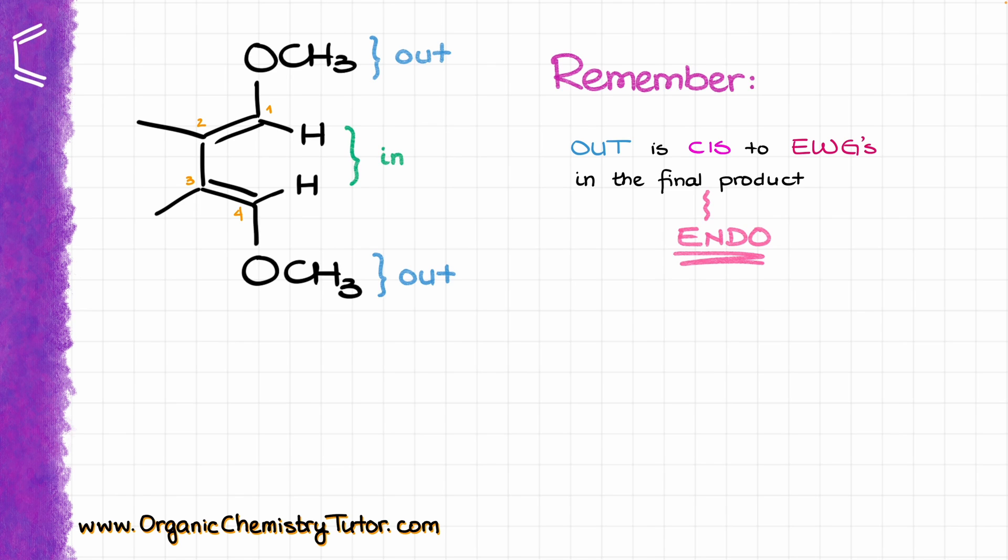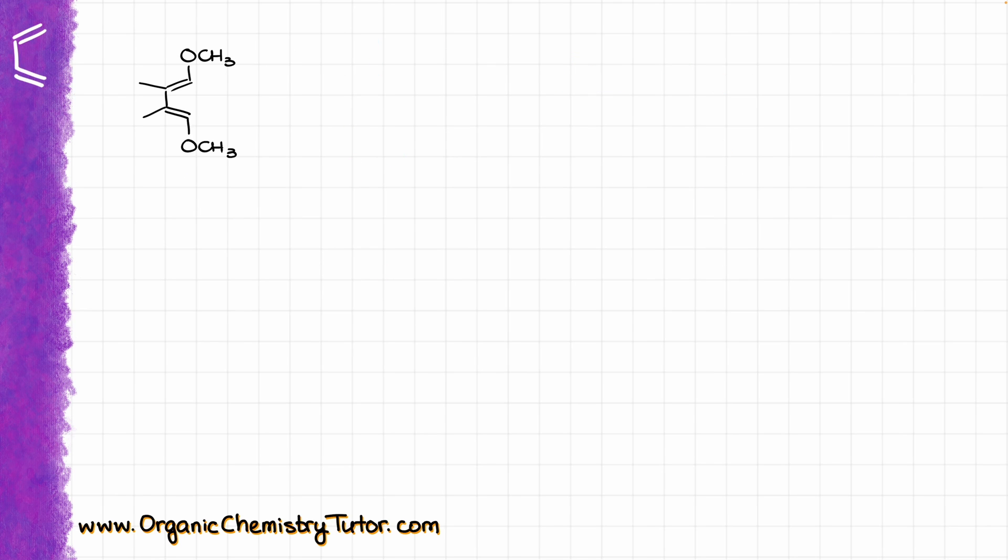So how exactly are we going to use this information? Well, it's best to illustrate with an example. I'm going to take my diene that I analyzed a moment ago and I'm going to react it with the following dienophile. In this case, the nitriles are naturally going to be my electron-withdrawing groups.